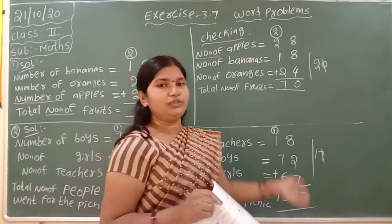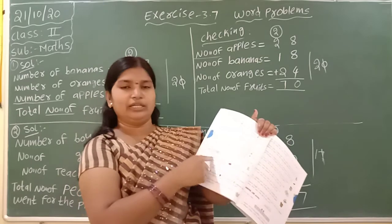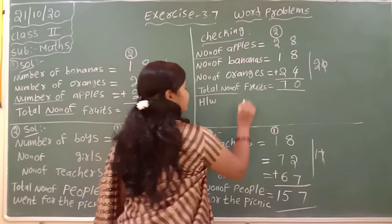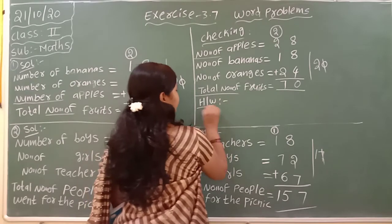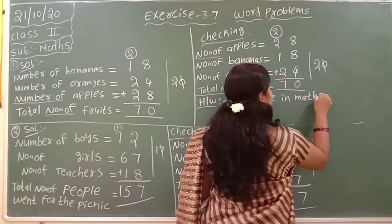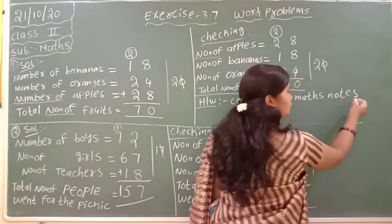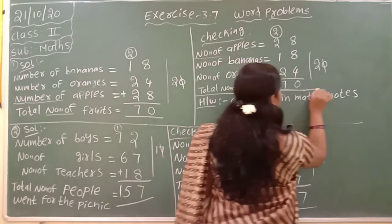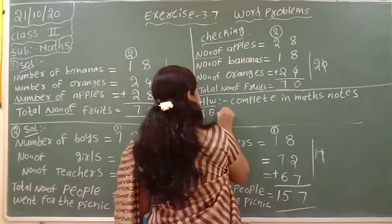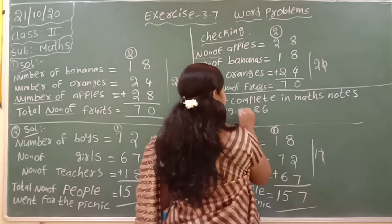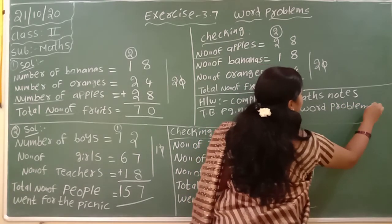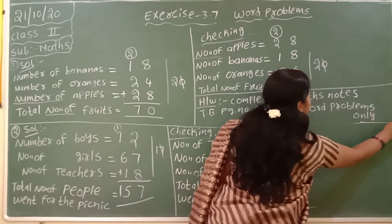If you change the order of the given numbers, then you can add and verify. So your homework is this one only — complete in-class notes, textbook page number 86, four word problems. You have to finish only these four word problems.